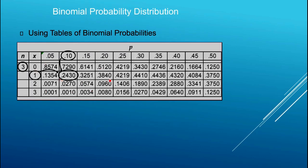Regardless, a table might look something like this, as found in a statistics textbook. The probability of success appears in the column headers, the number of trials appears in the outer row margin, and the number of successes appears alongside. Looking up one success out of three trials with p = 0.1, we find the answer is 0.243 — the same answer we've now calculated three different ways.